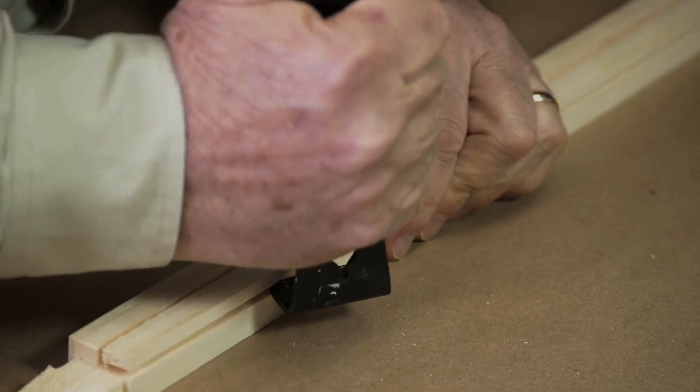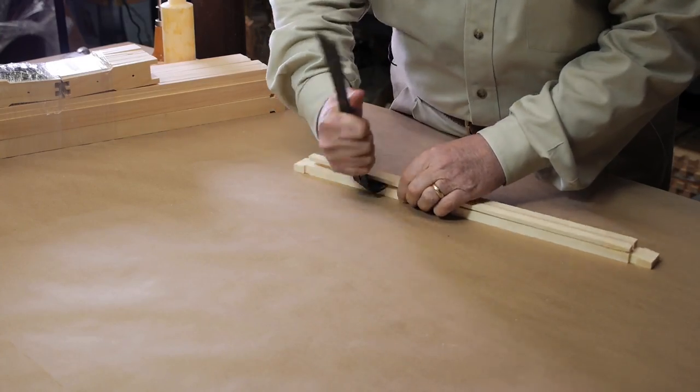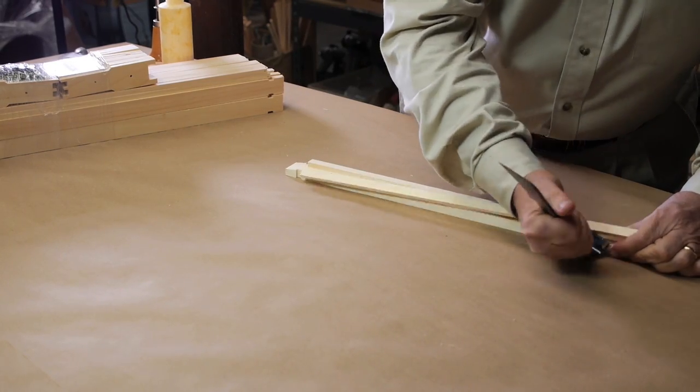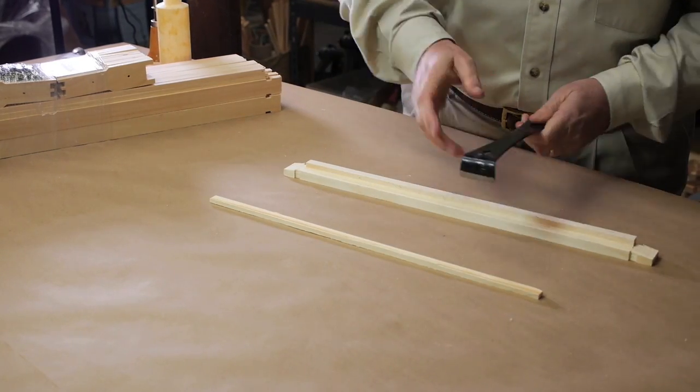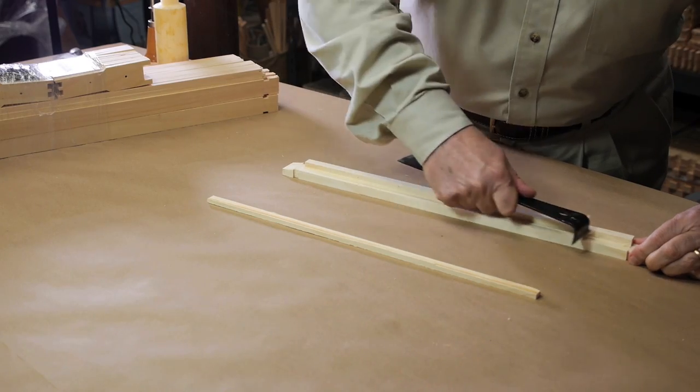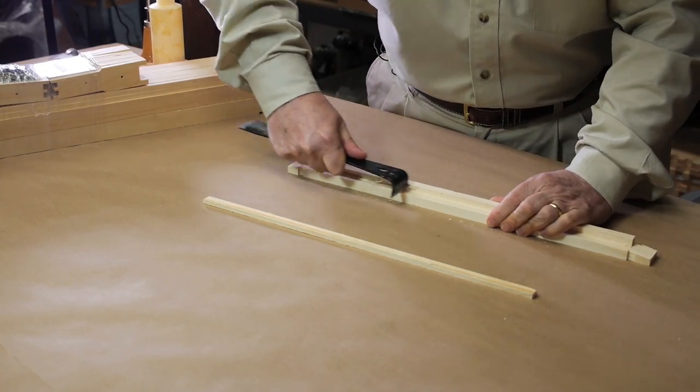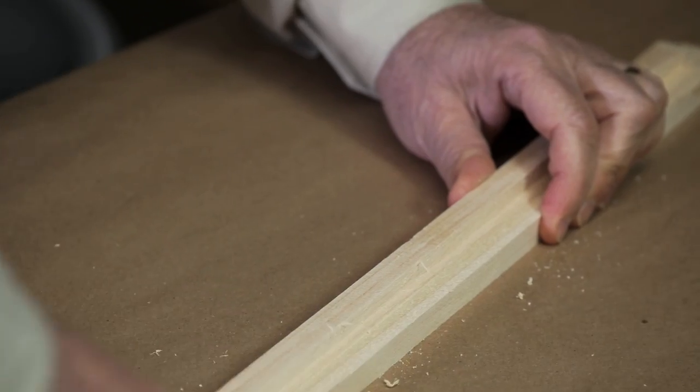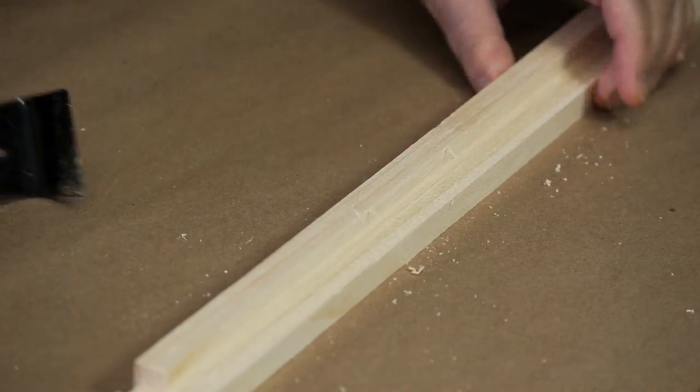Take a top bar and snap out the wedge strip. You can use your hive tool to pry the wedge strip from its place. Clean up any rough edges by scraping the wood with your hive tool. Save that wedge piece because you're going to need it when you're installing the wax foundation.